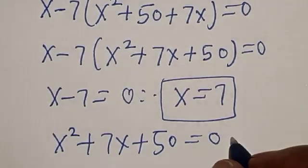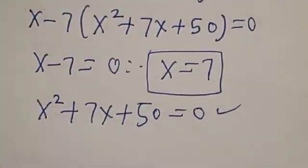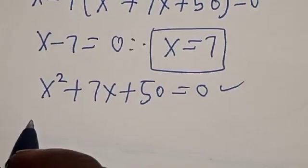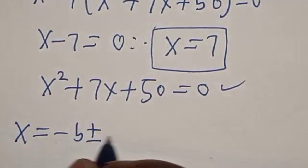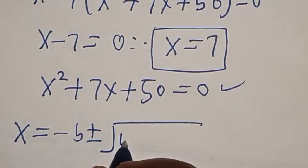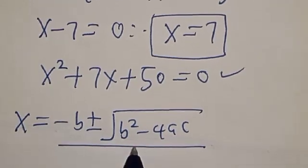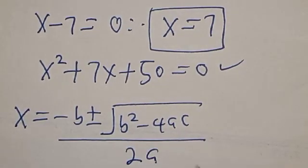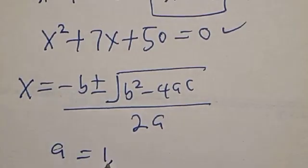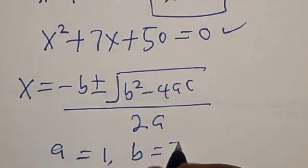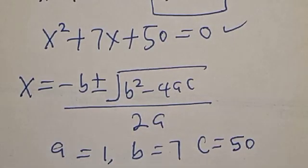This is a quadratic equation. Using the quadratic formula: s equals negative b plus or minus square root of b squared minus 4ac, all divided by 2a. Here a equals 1, b equals 7, and c equals 50.